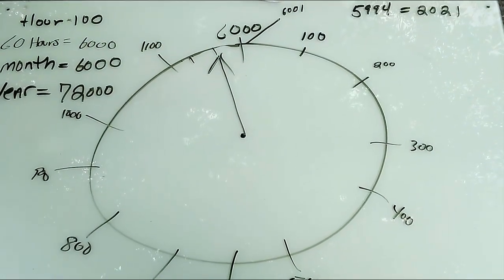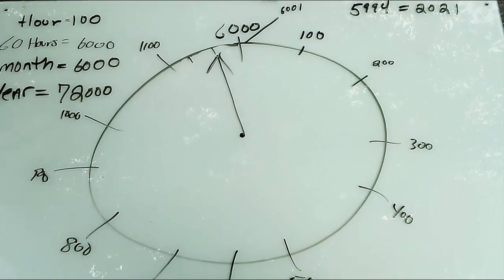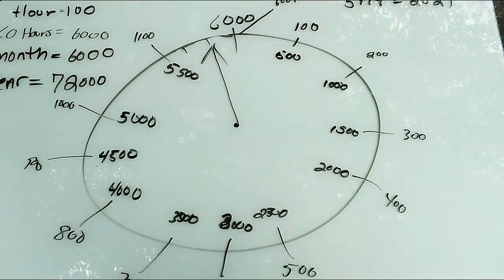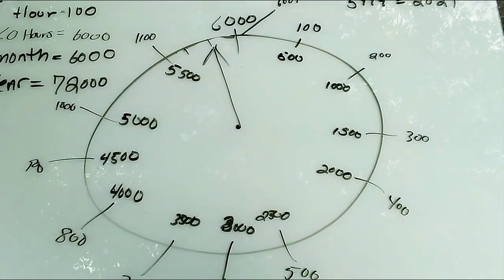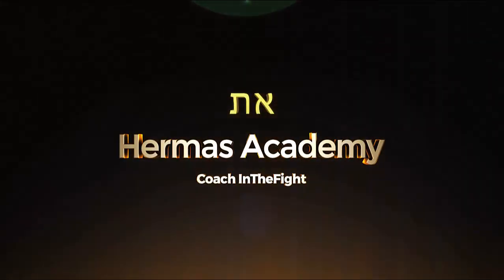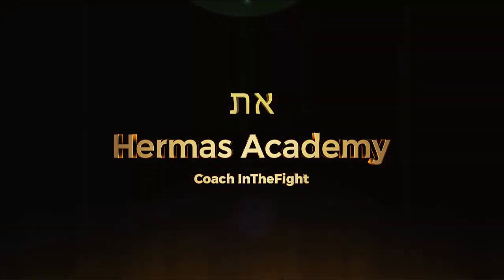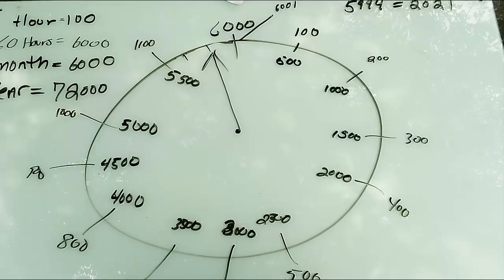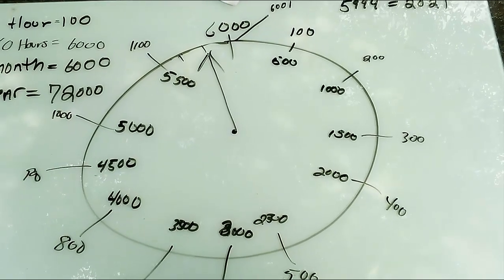Because when you're looking over the course of the 6,000 years, the numbers will look like this. So 5,994 would be about right there. And that occurred in 2021, which started the last seven years before the millennial age starts in the fall of the year 2028.